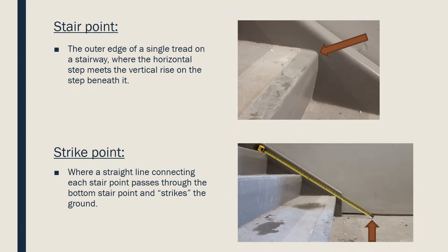A stair point is the outer edge of a single tread on a stairway, where the horizontal step meets the vertical rise on the step beneath it. A strike point is created where a straight line connecting each stair point passes through the bottom stair point and strikes the ground, as demonstrated in the picture of a tape measure simulating a straight line.